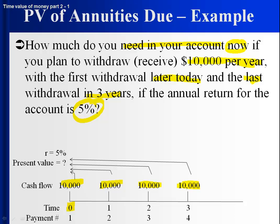So this is a question where we want to find the present value, because we're going to be getting $10,000 today, $10,000 in a year, $10,000 in two years, and $10,000 in three years. If we get the present value of that, then getting those four payments is the same as getting the present value today — which by definition, if we put that amount in and earned 5%, we'd be able to make all four withdrawals. So we want to find the present value.